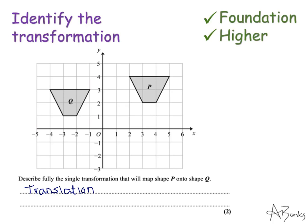With a translation I have to tell the examiner how far it has moved. The question says describe the transformation that maps shape P onto shape Q, so it's important we're going from P to Q. I'm going to mark the same point on both shapes: to get from my point on P to my point on Q I'm going 6 squares left and 1 square down. I need to write this in vector form: minus 6 on top because it's 6 left, and minus 1 on the bottom because it's 1 square down. You need to use the vector for this.